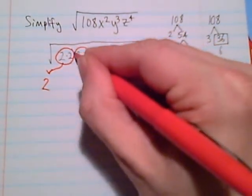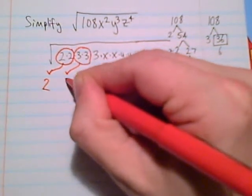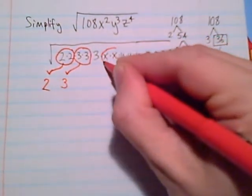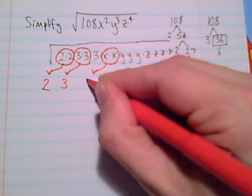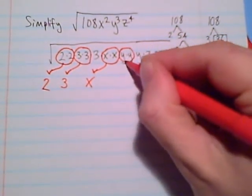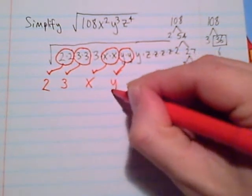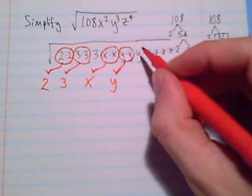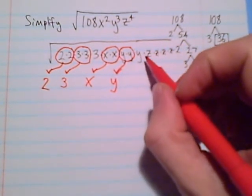All I need to do is see a pair of factors bring one out. So a pair of twos bringing out one 2, bring out one 3. A pair of x's is one x. We have a pair of y's with one y left over. And so the leftovers, if it can't get paired up, it needs to stay in the radical.